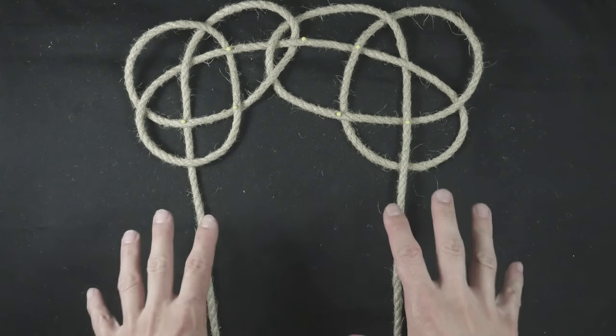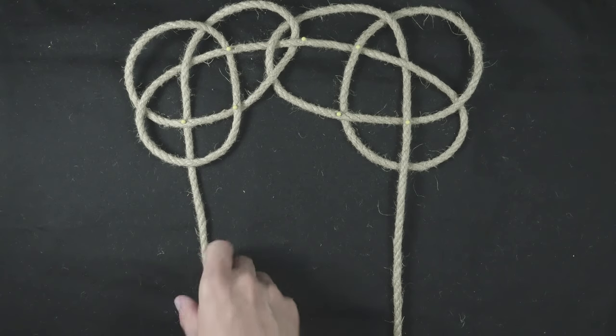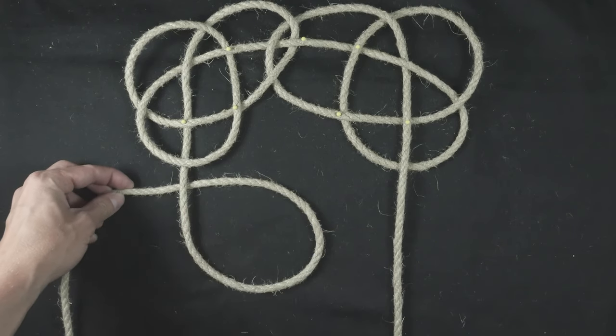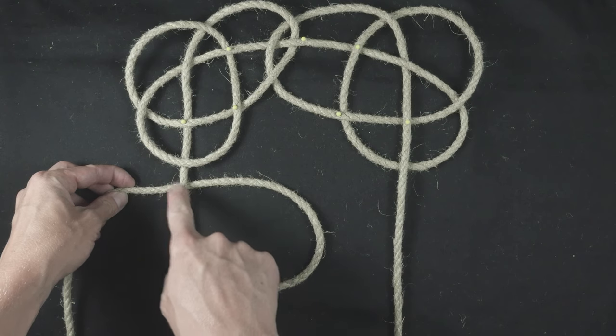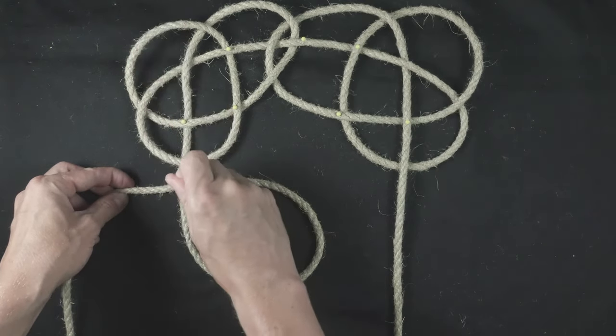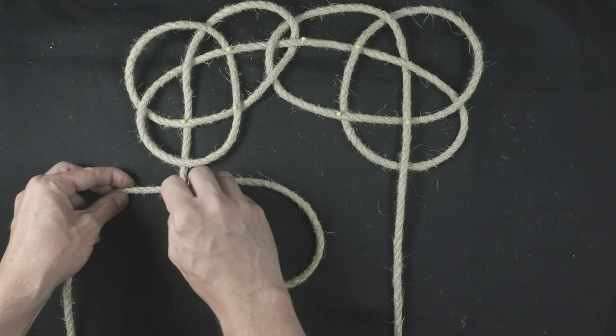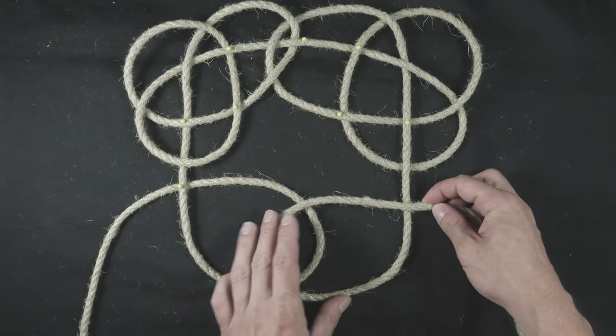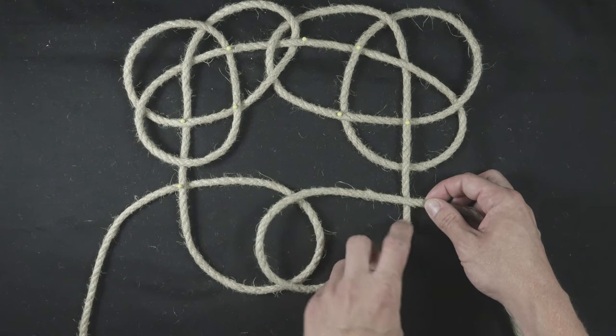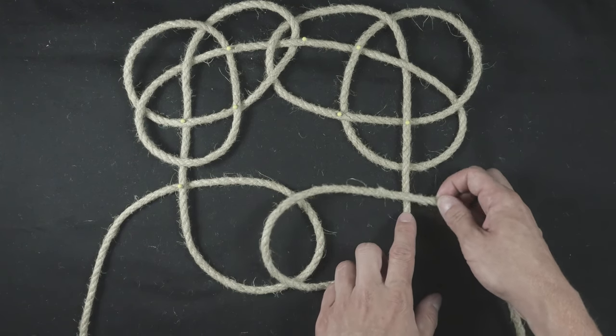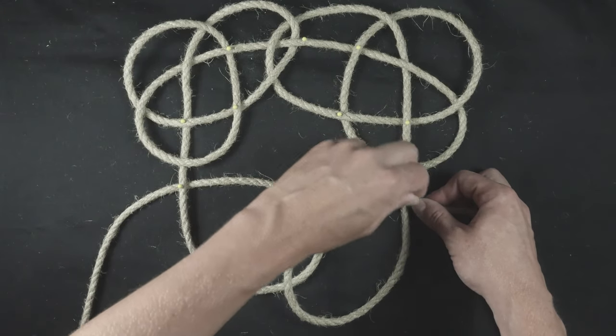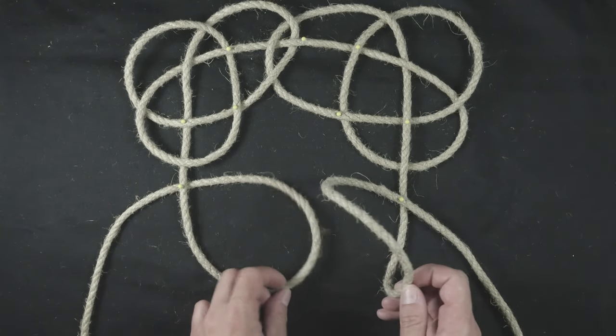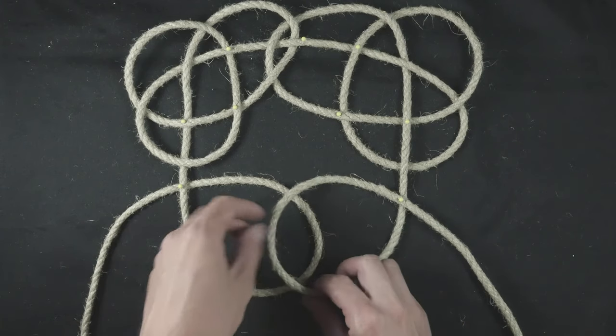Now we move on to the bottom part. On the left we again create a loop with the working end passing under the standing part. With the right end we again create a loop with the working end passing over the standing part. As you can see here, I want these two loops to overlap. So the right loop passes over the left one.